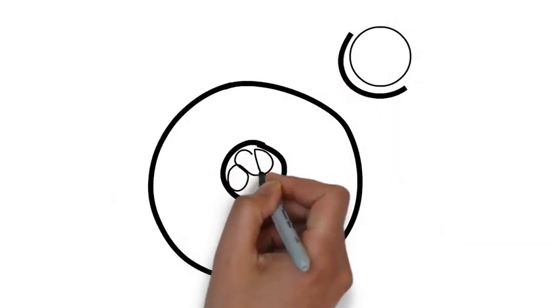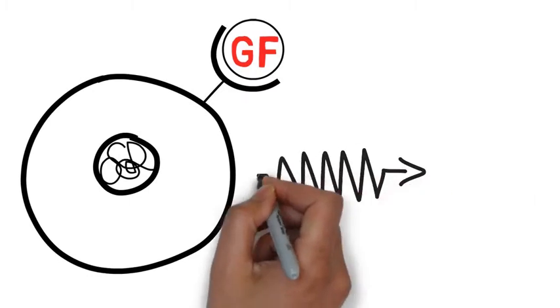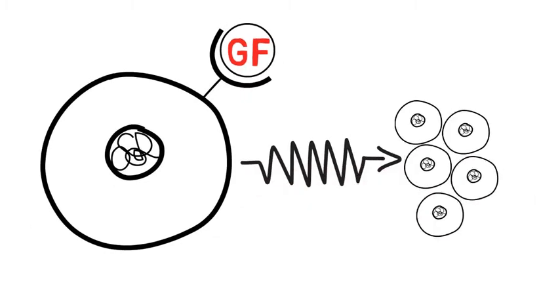When in the cartilage state, antlers are packed with growth factors and stem cell proteins that promote this rapid growth.